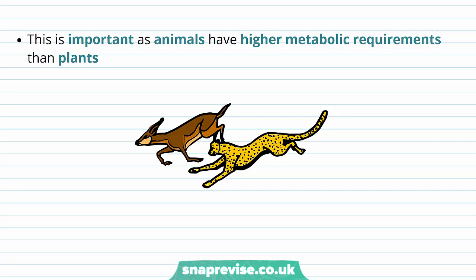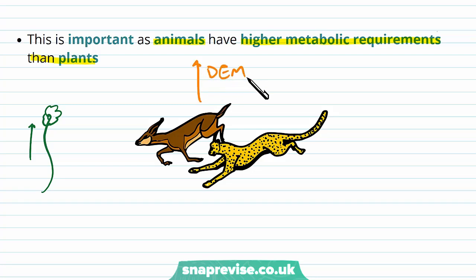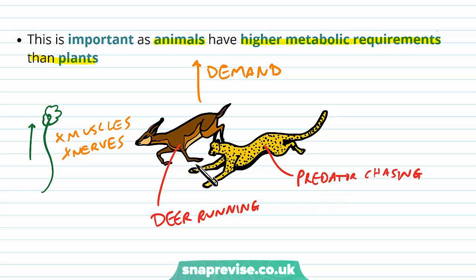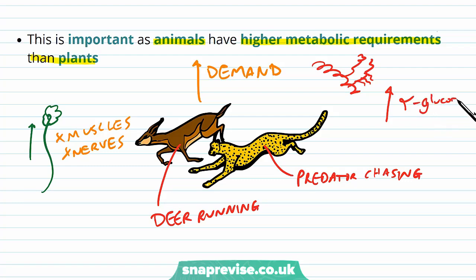Why do animals have glycogen but plants don't? Animals have higher metabolic demands than plants. Plants do carry out a lot of processes — growing, repairing, carrying out lots of different things — but the demand is much greater in animals because they are much more mobile: they move around, run, and use muscles and nervous tissue. Plants don't have any muscles or nerves and don't tend to have as large organs as we do. So it's better for animals to have a very highly branched molecule which can be accessed at lots of points to quickly release lots of alpha glucose and therefore quickly carry out respiration.